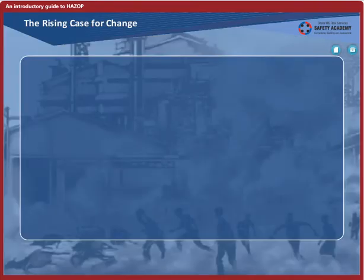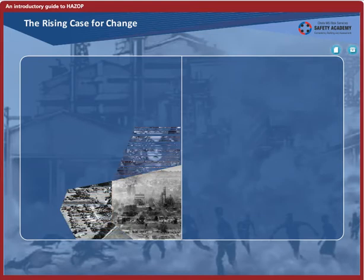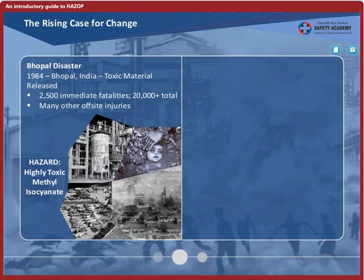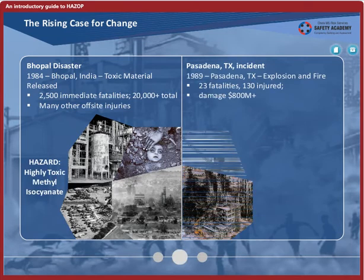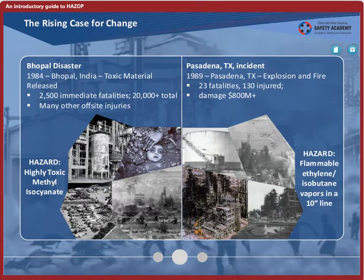Why are organizations a lot more conscious about safety and risk identification and mitigation techniques? Two of the worst industrial disasters in fairly recent times — the Bhopal gas tragedy in India in 1984 and the Pasadena incident in Texas in 1989 — caused many landmark changes. Let's look at the Bhopal gas tragedy to see how a periodic process hazard analysis could have prevented the death of over 20,000 people. We will revisit the Pasadena incident again at the end of this course.